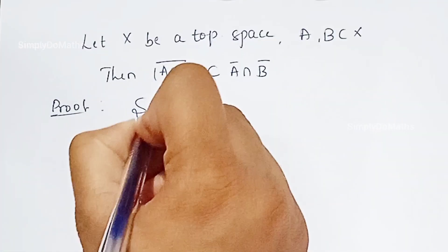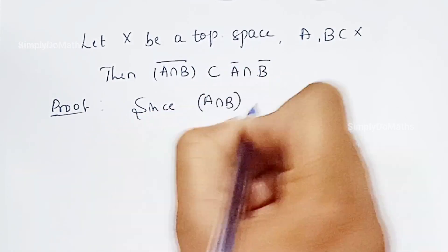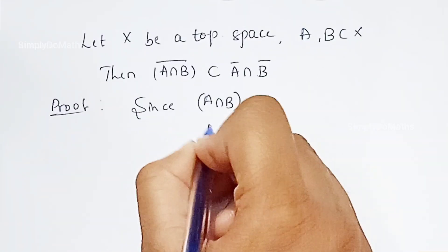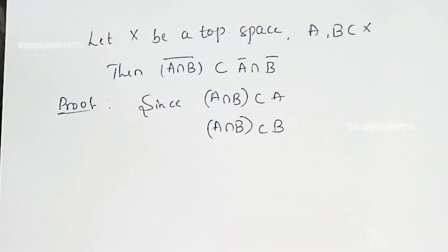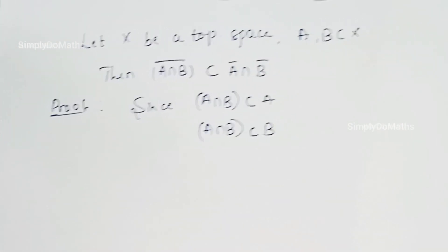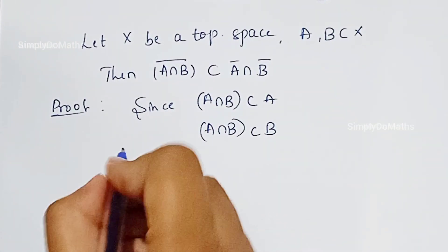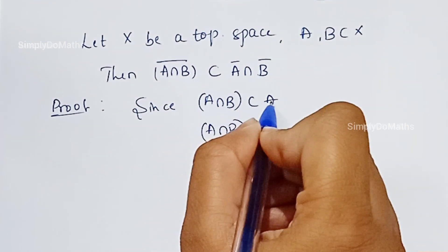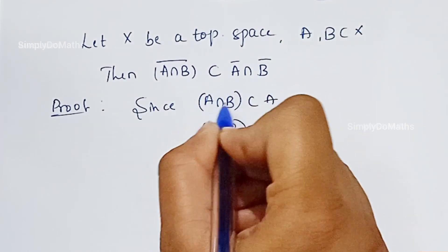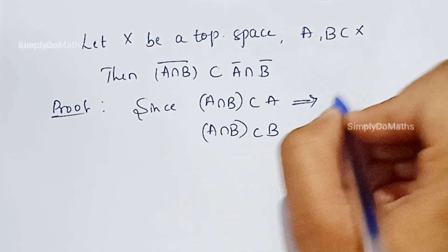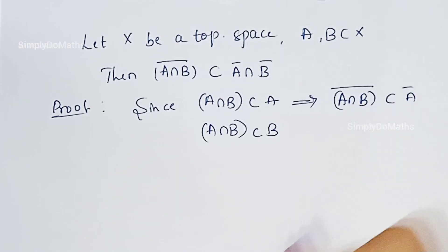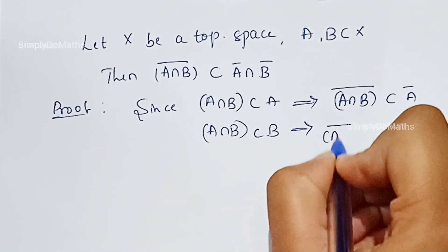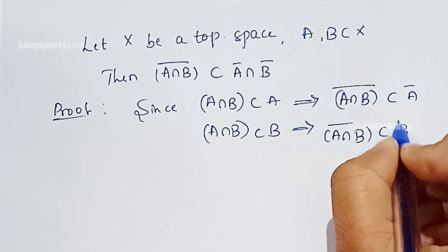Let us prove this. We know that A intersection B is a subset of A, and A intersection B is a subset of B, which is always true by the definition of intersection and subset. So we can say that A intersection B is a subset of A. This implies the closure of A intersection B is a subset of A-bar, and the closure of A intersection B is also a subset of B-bar.